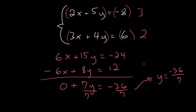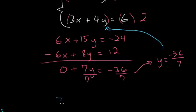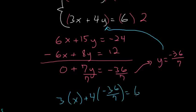Now that we have the solution for y, we need to find the solution for x. So we can plug this value of y into either one of the equations. I'll plug it into the bottom one. So now we have 3 times x plus 4 times minus 36 over 7 equals 6.